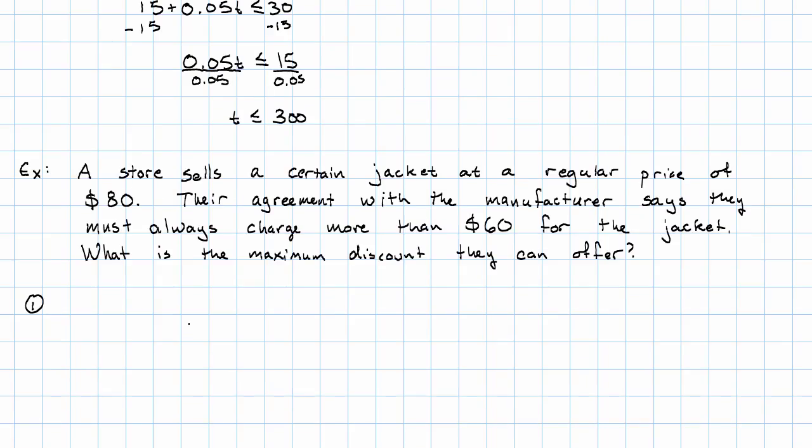The inequality that we need is, they must always charge more than $60 for the jacket. So, something has to be more than $60. What? What they charge has to be more than $60. Then, what do they charge?